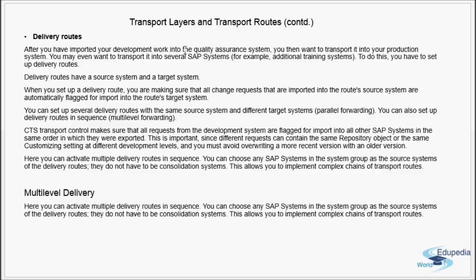After you have imported your development work into the Quality Assurance system, you then want to transport it into your production system. You may even want to transport it into several SAP systems — for example, additional training systems. To do this, you have to set up the delivery routes. The transport has moved from development to QA using the consolidation route, and now you want to transport it into production and other systems — those routes are known as delivery routes.